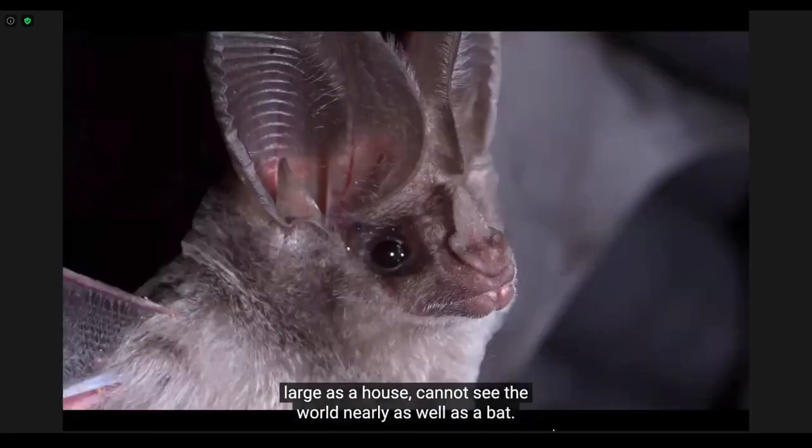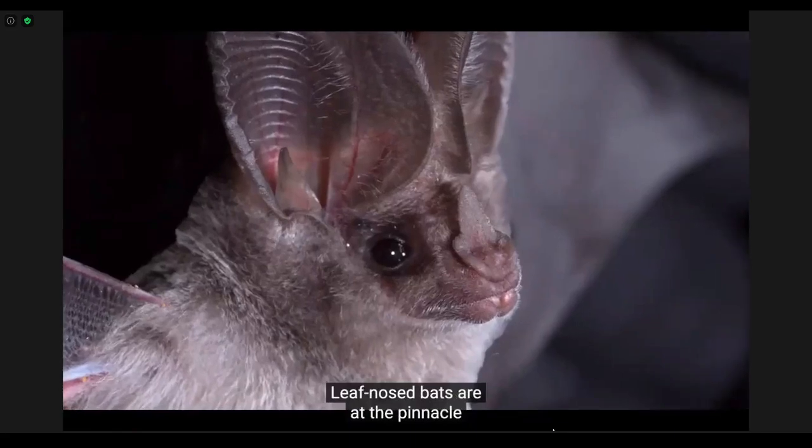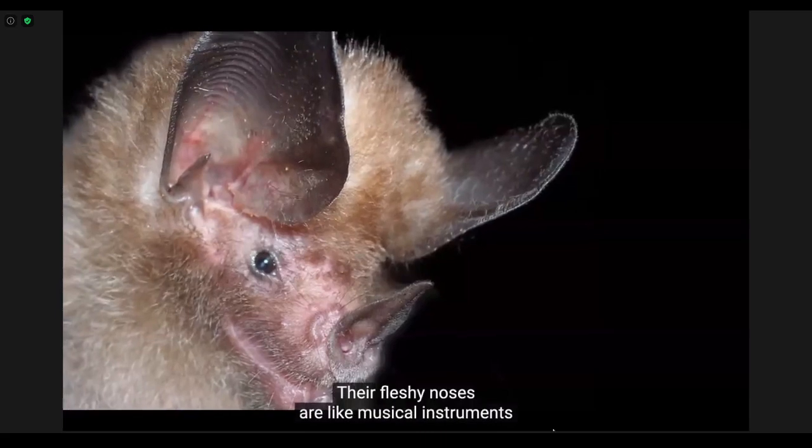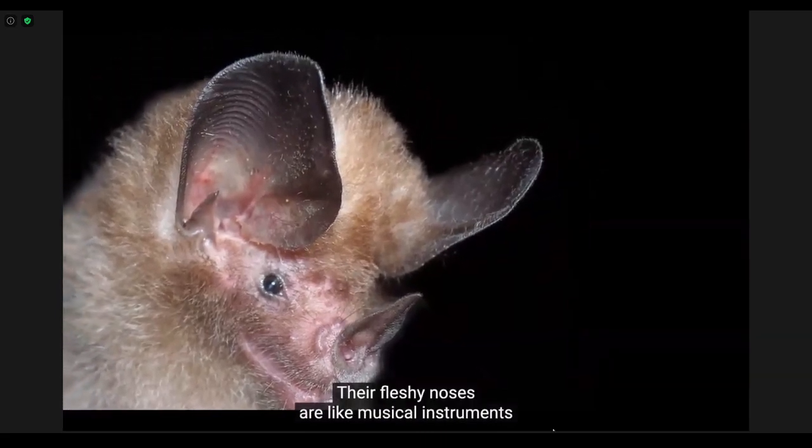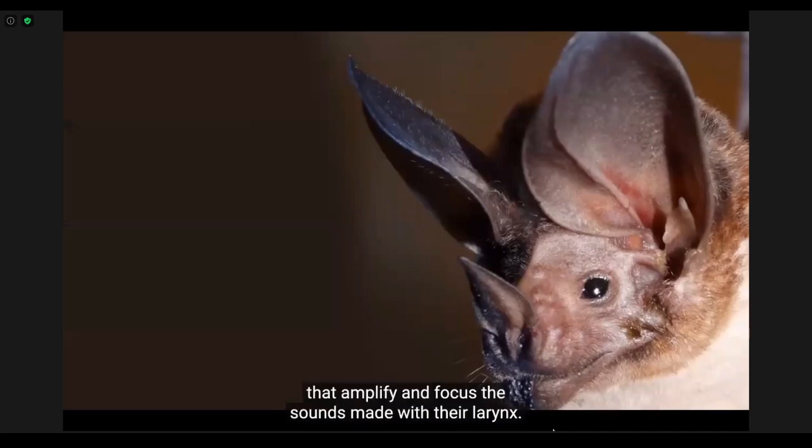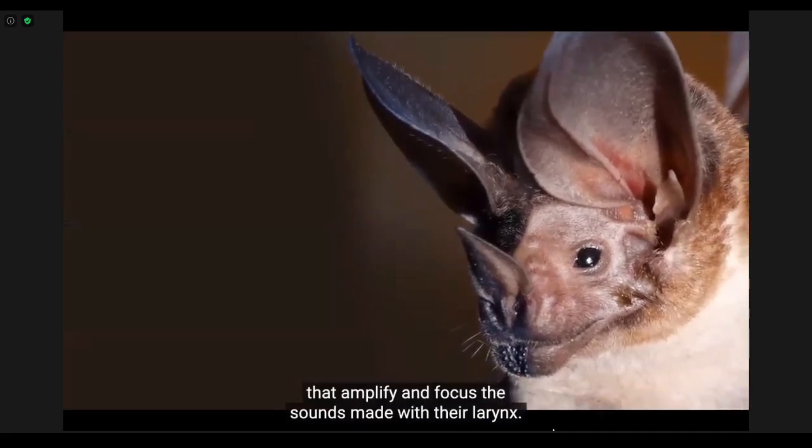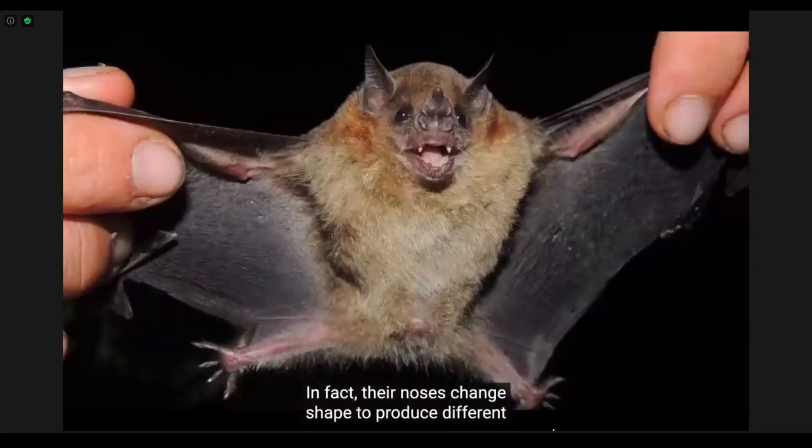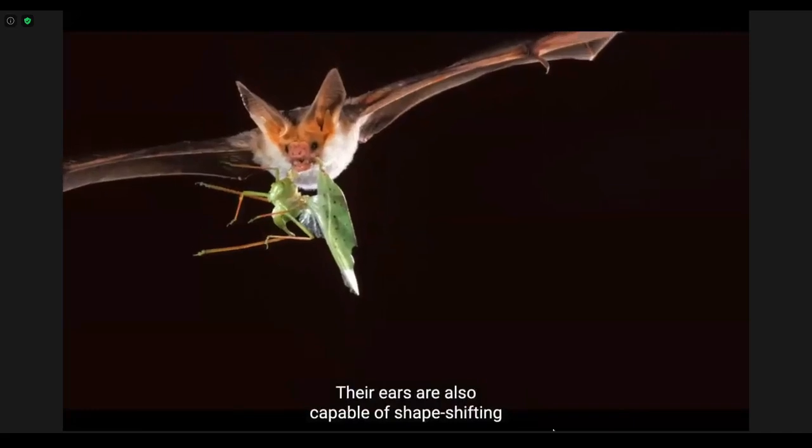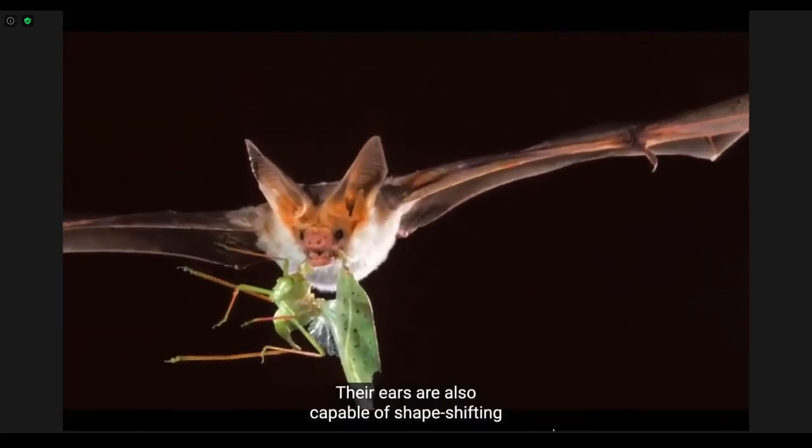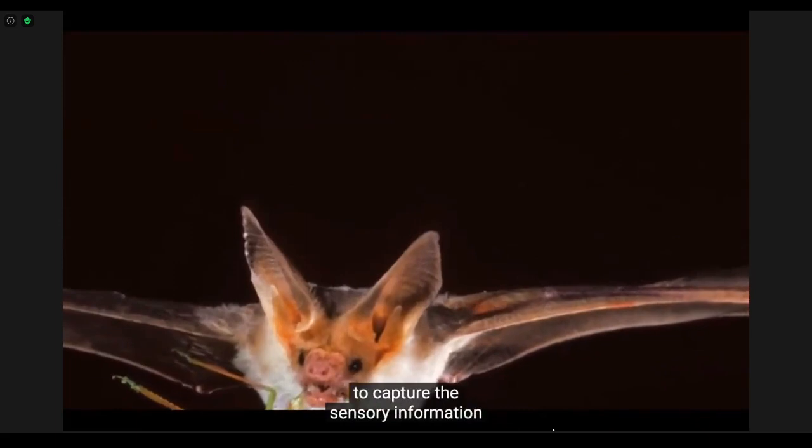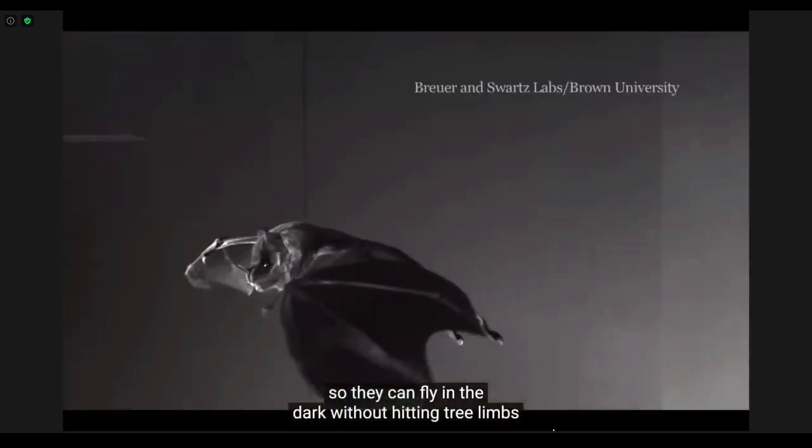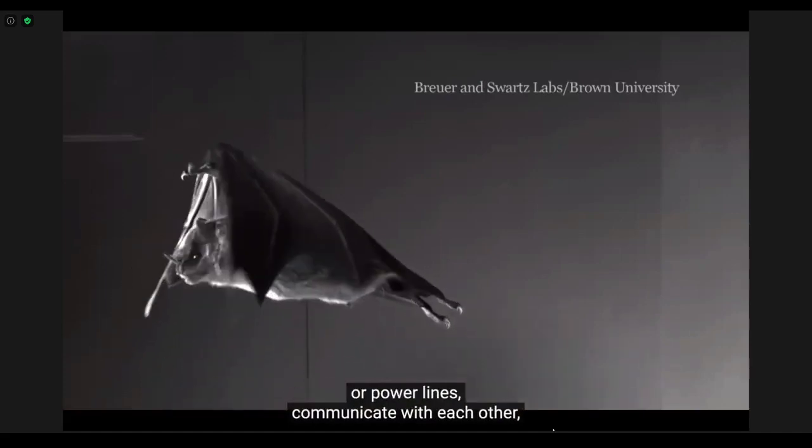Leaf-nosed bats are at the pinnacle of echolocating animals. Their fleshy noses are like musical instruments that amplify and focus the sounds made with their larynx. In fact, their noses change shape to produce different sounds for scanning different objects in the surroundings. Their ears are also capable of shape-shifting to capture the sensory information they need at any moment, so they can fly in the dark without hitting tree limbs or power lines, communicate with each other, and pick an insect meal.